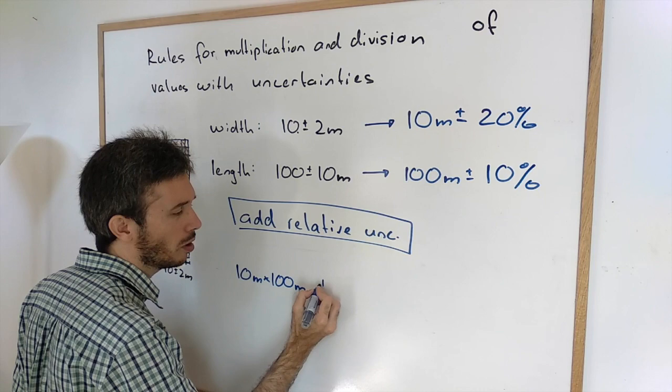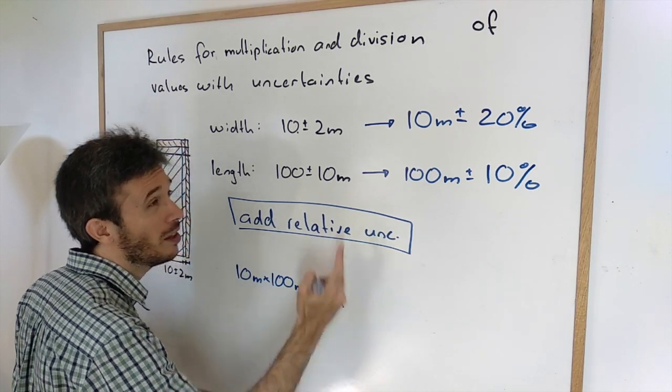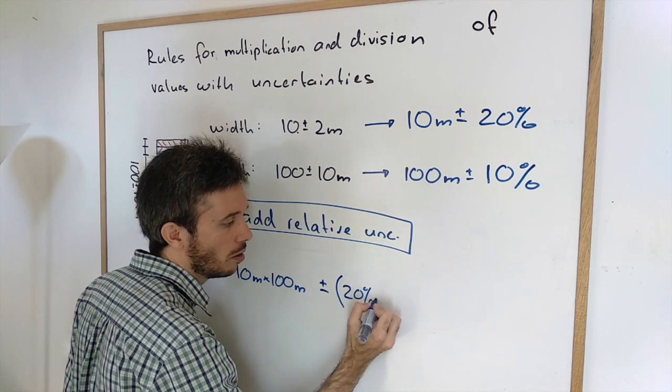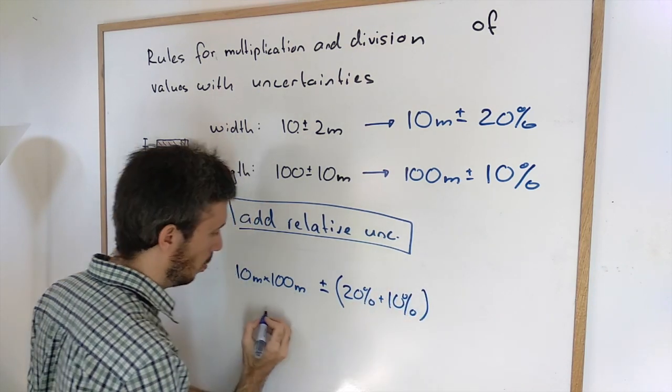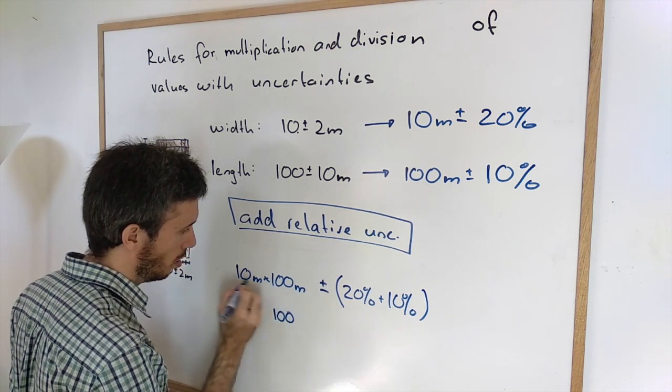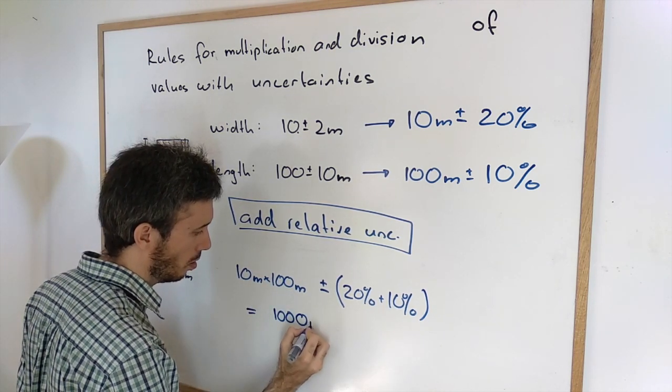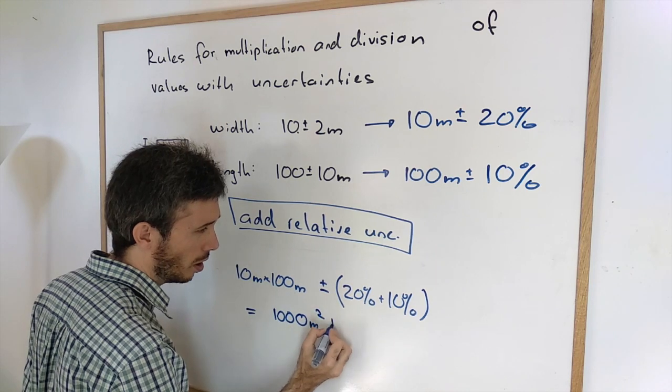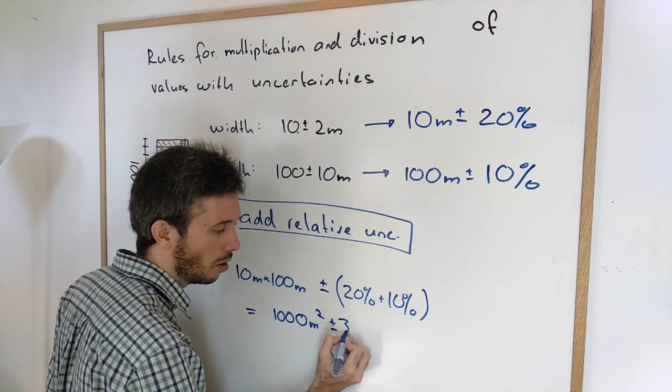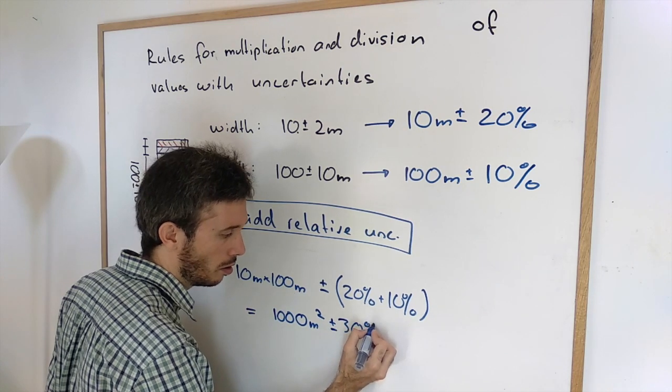And then how much could I be off? I'm adding the percentage values. So 20 percent plus 10 percent. So what I get is 1000 square meter plus minus a total uncertainty of 30 percent.